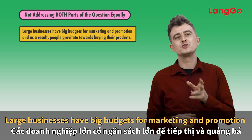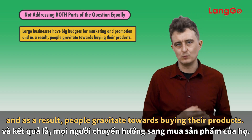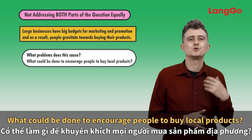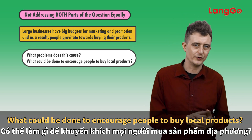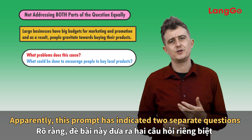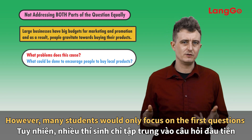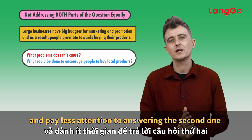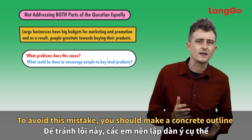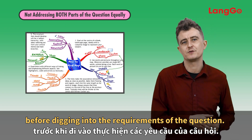For example: 'Large businesses have big budgets for marketing and promotion, and as a result, people gravitate towards buying their products. What problems does this cause? And what could be done to encourage people to buy local products?' This prompt has indicated two separate questions for students to write about. However, many students would only focus on the first question and pay less attention to the second, which accounts for 50% of the fulfilment criteria. To avoid this mistake, make a concrete outline before addressing the requirements of the question.